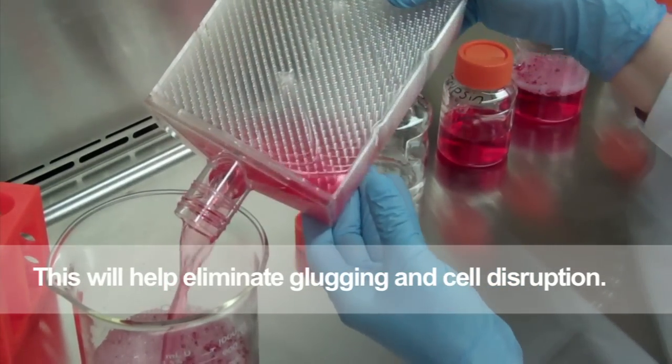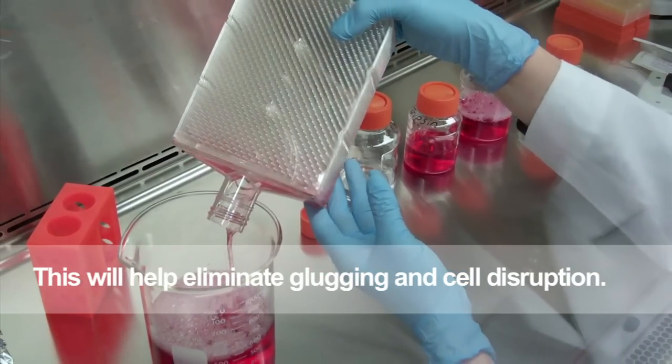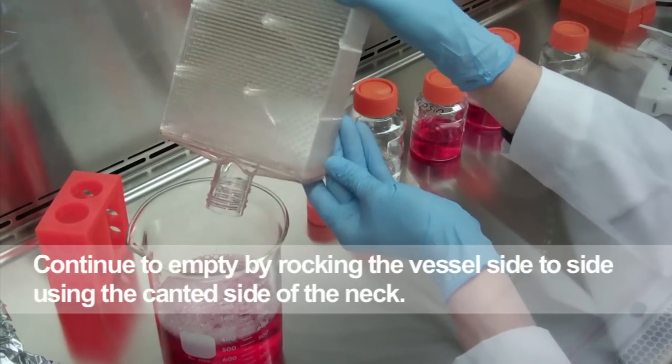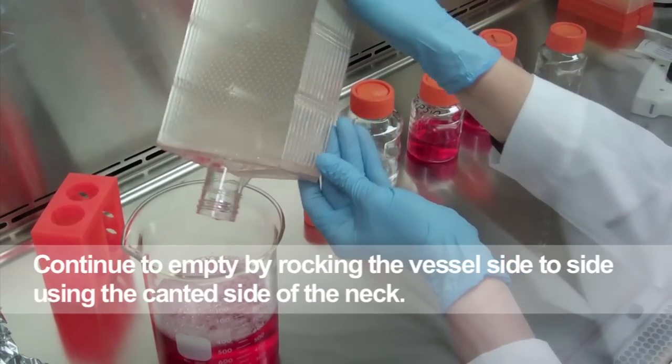This will allow the liquid to move out smoothly and eliminate any glugging that may disturb and pull your cells off of the surface. Continue to empty by rocking the vessel back and forth using the canted side of the neck.